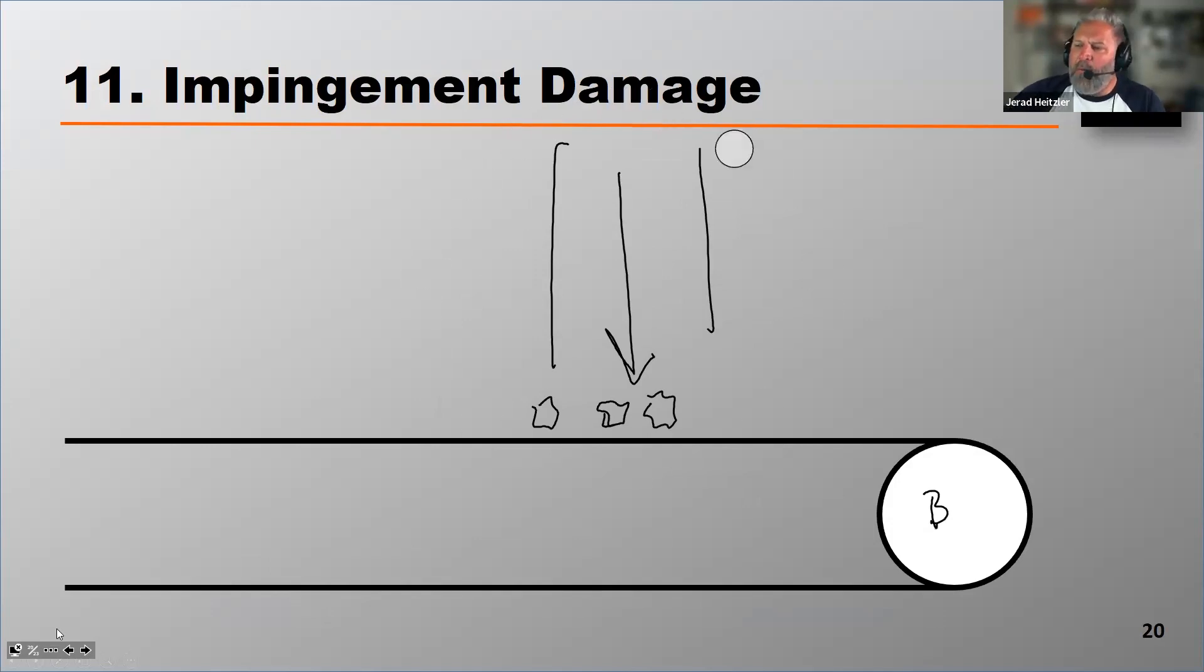Another practice, what we've seen some larger mining operations do, is let that material approach at what we call a grazing angle. As that material settles on that belt at a grazing angle, it's less likely to cause that impingement damage, or that impingement damage may not be significant.